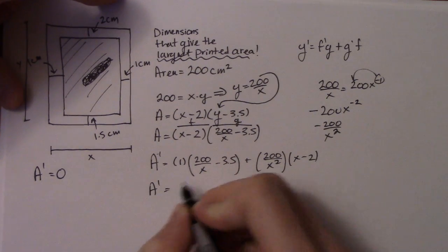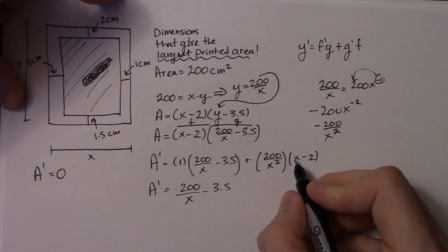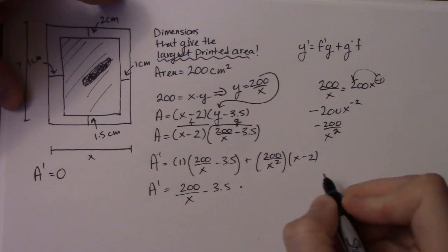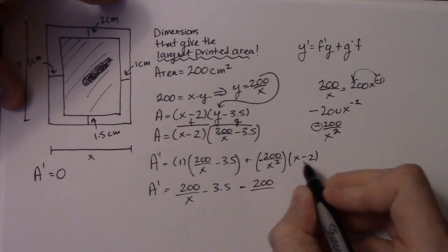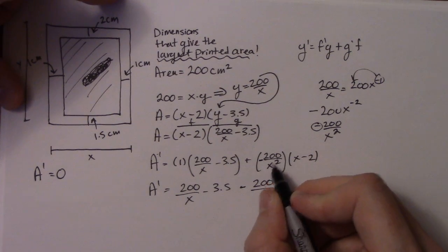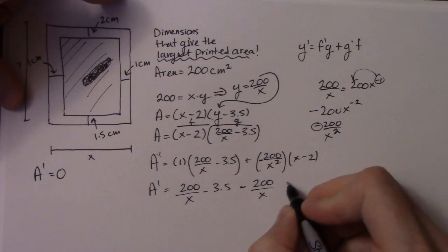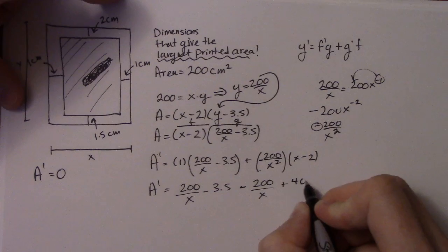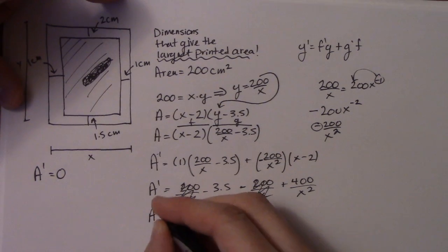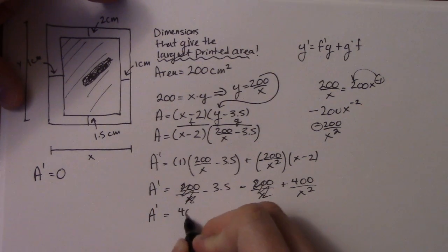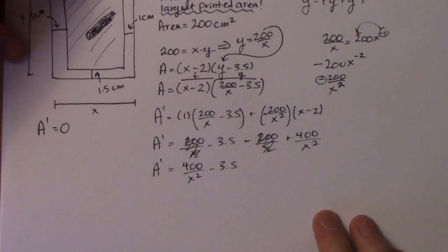Times my f which is x minus 2. So I'll simplify it a little bit. So I got 200 over x minus 3.5. Then I'll distribute here. So negative 200 over, this times this, so negative 200 x squared times x, so x's cancel and I have 1x left. And then I multiply this by 2, so negative times negative is positive. So plus 400 over x squared. You can see, voila, really nice. You get something that works out pretty good. So 400 over x squared minus 3.5. So there it is, there's my derivative. That's a really important step.